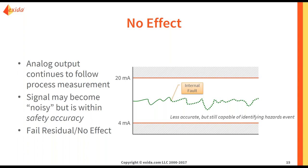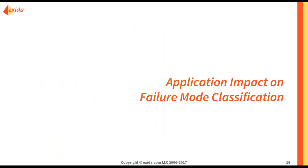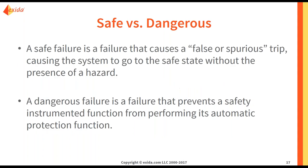So those are the different failure modes you might find with an analog transmitter. How do we classify them — how do we decide if they are safe, dangerous, detected, or undetected? A safe failure is a failure that causes a false or spurious trip, causing the system to go to the safe state without the presence of a hazard — a nuisance trip. A dangerous failure is a failure that prevents the SIF, or Safety Instrumented Function, from performing its automatic protective function, so it cannot respond to the hazard. There is no trip, but your SIF is no longer functional and you could have a dangerous event.